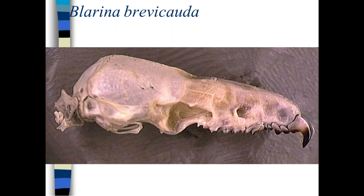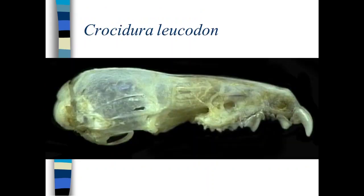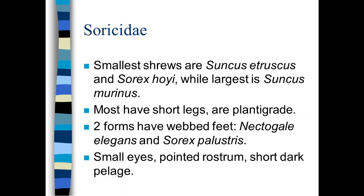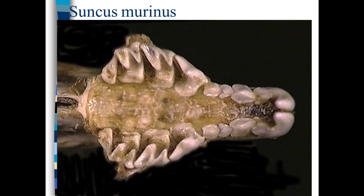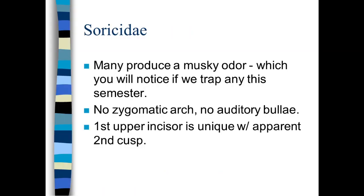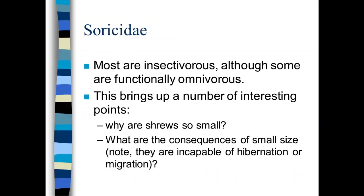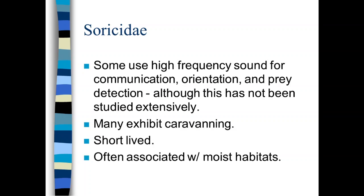So there's Blarina brevicauda. We have Blarina brevicauda in the northern part of the state. Blarina carolinensis, where we are here in Southeast Missouri. And then Blarina hylophaga is just to the west and south of us, but they all have these red teeth. There's Crocidura, and you notice that the teeth are white. So this is in the Crocidurinae, so it's the other subfamily. Notice the dilambodont dentition. We did talk about caravanning, which is kind of cool.